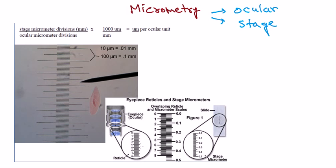The ocular stage divisions are not that important on their own — you can see simple divisions shown with no specific numbers, because it's constructed so that small equal unit divisions are provided. The actual scale to measure an organism is the stage micrometer or stage division.